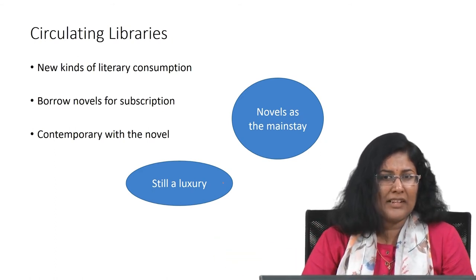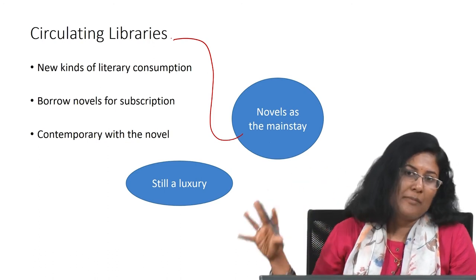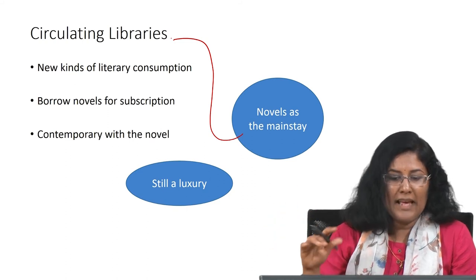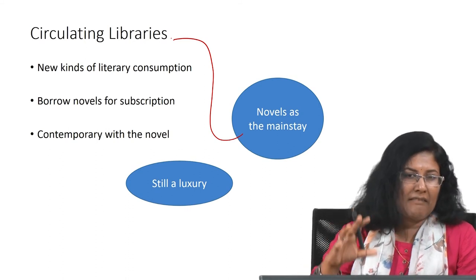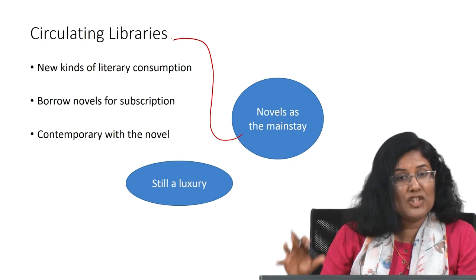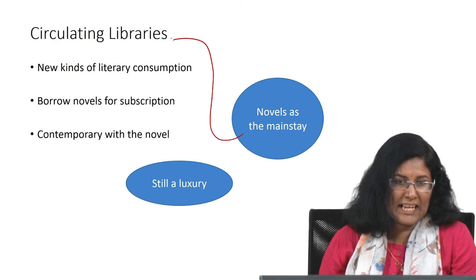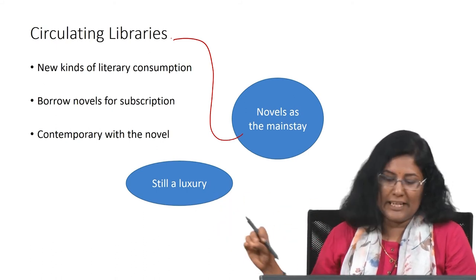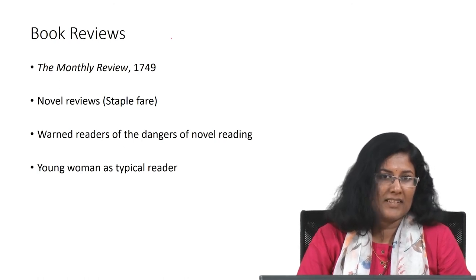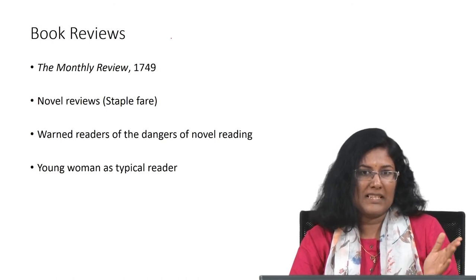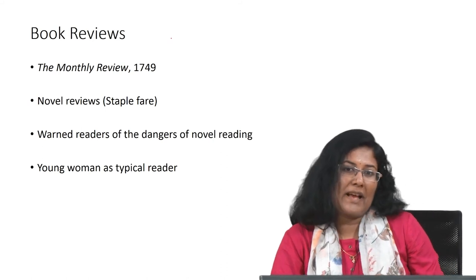The growth of circulating libraries was in tandem with the growth of the novel genre — novels were the mainstay of these libraries, and readers preferred to read novels primarily. Buying books was still a luxury for the majority, which is why libraries became very popular. There are references to libraries in other fiction and plays of the day — for example, The Rivals by Sheridan contains a heroine who frequently resorts to the circulating libraries. Book reviews also became a major phenomenon in magazines; reviews of novels began to be published in the Monthly Review, which came out in 1749, and became a staple item.